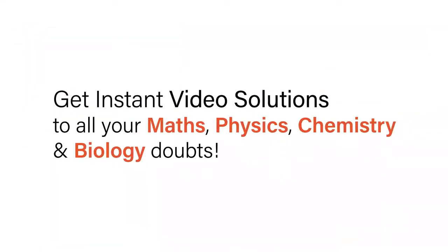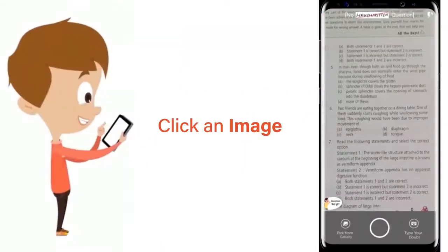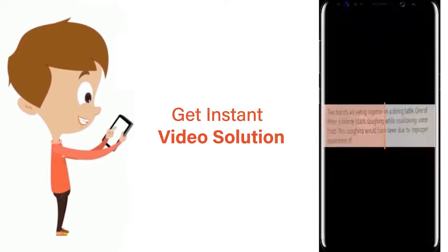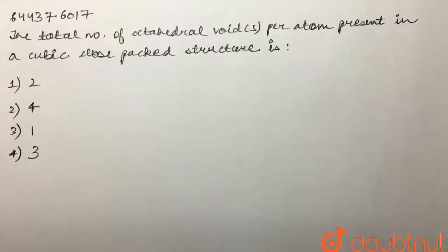With Doubtnet, get instant video solutions to all your math, physics, chemistry, and biology doubts. Just click the image of the question, crop the question, and get instant video solution. Download Doubtnet app today. Our question is: total number of octahedral voids per atom present in a cubic close-packed structure is what?